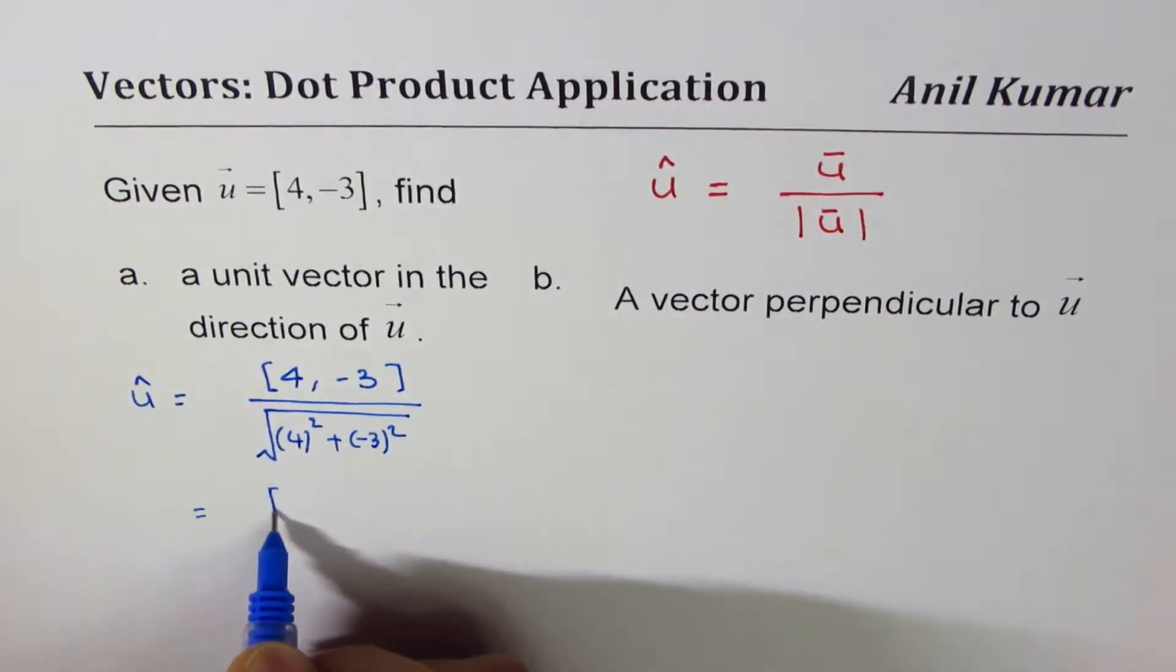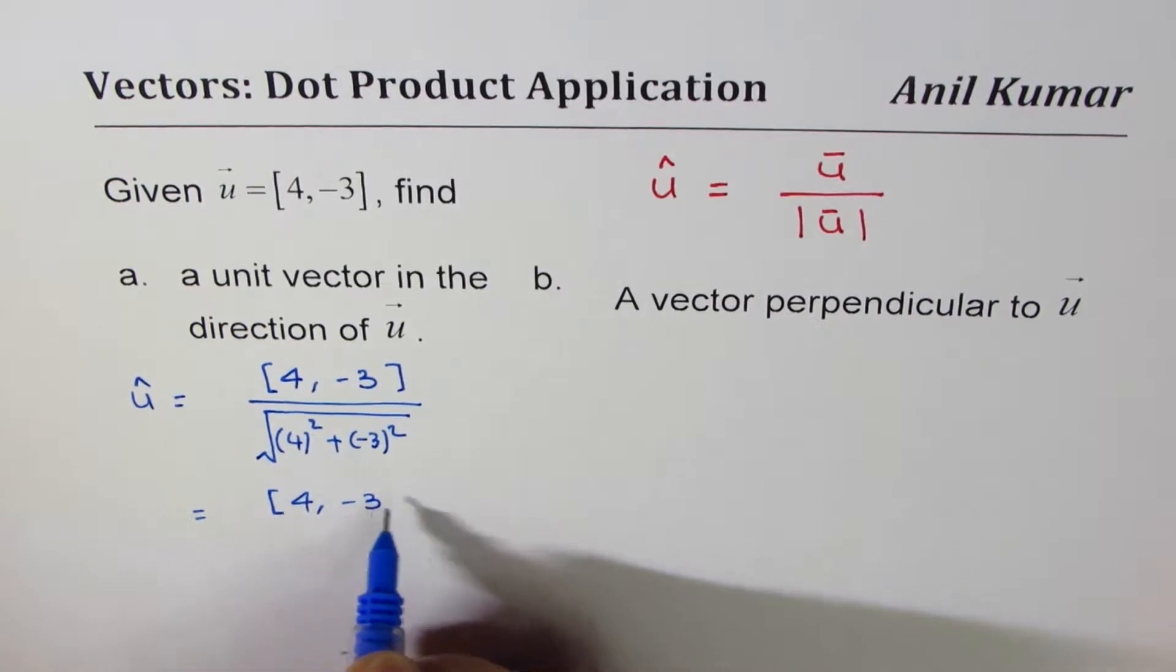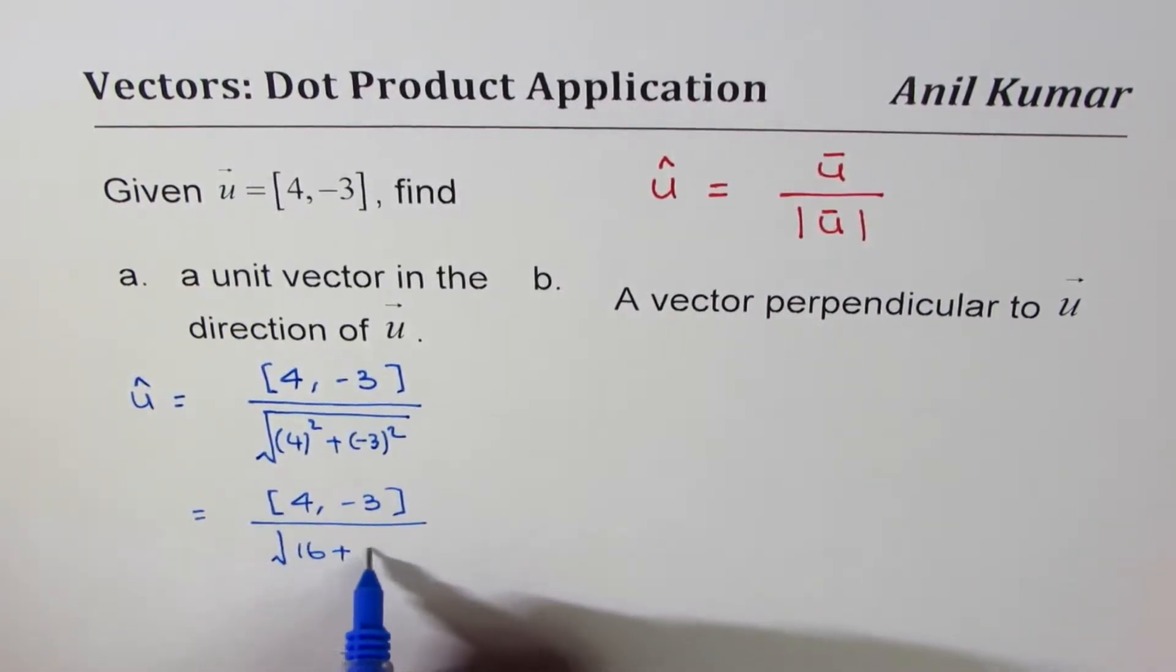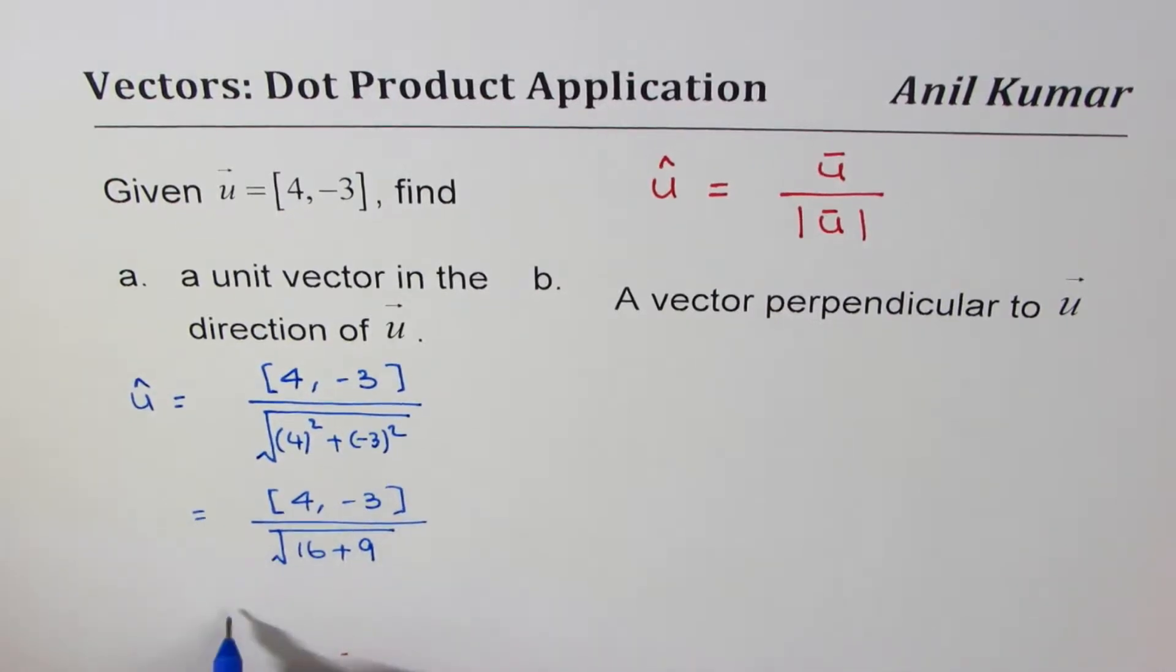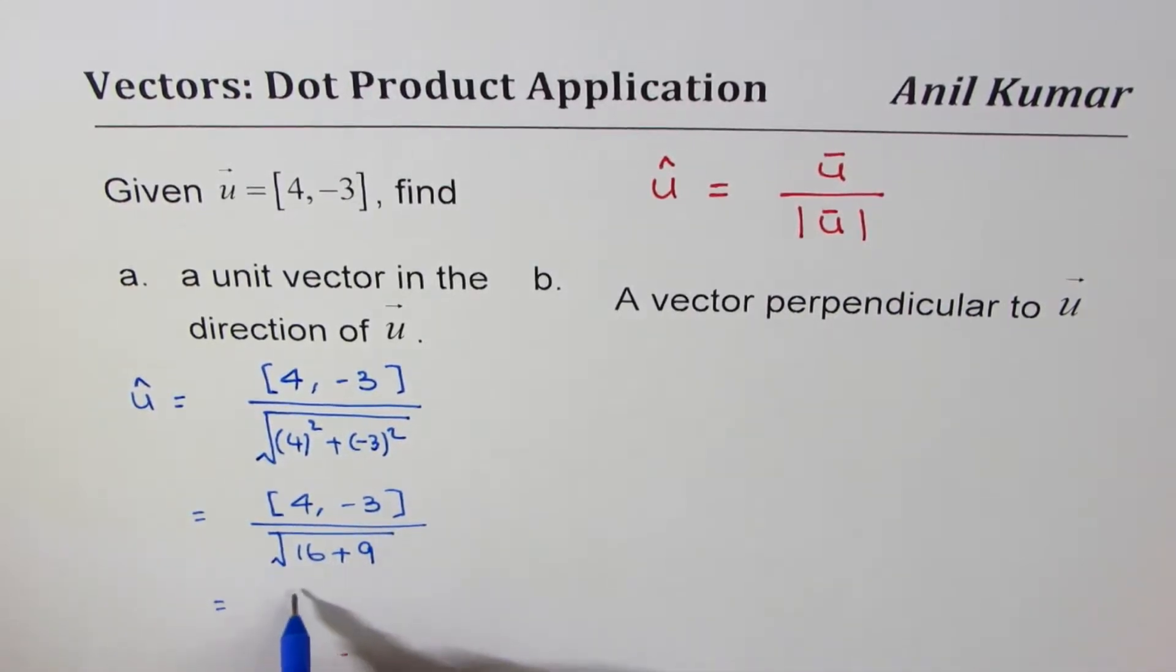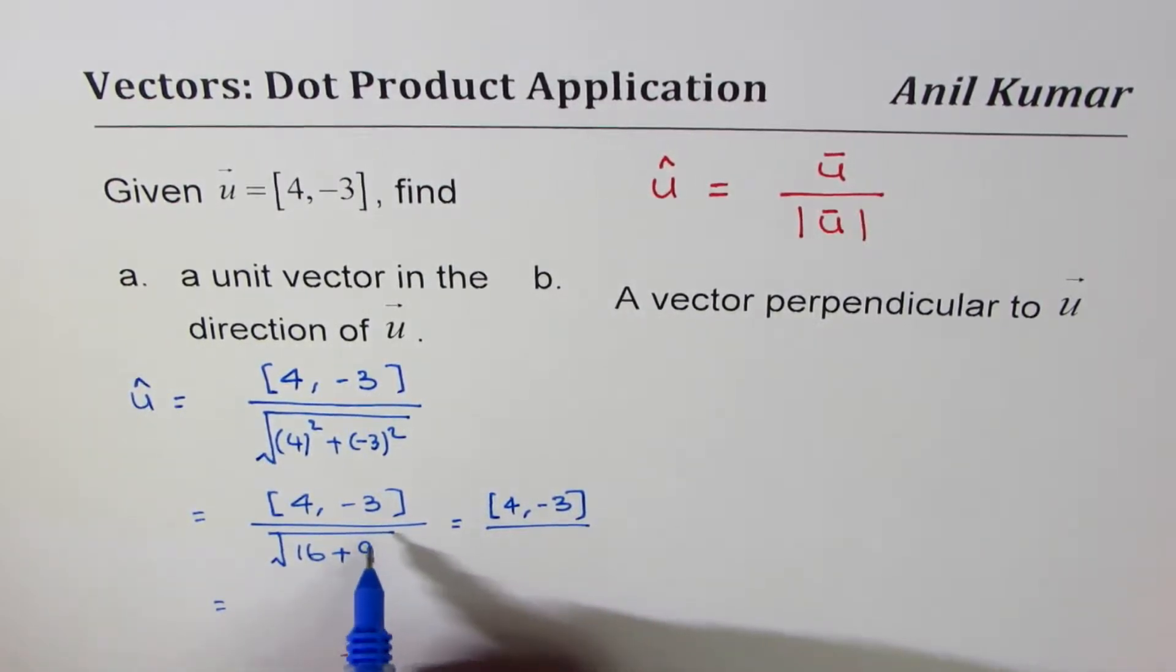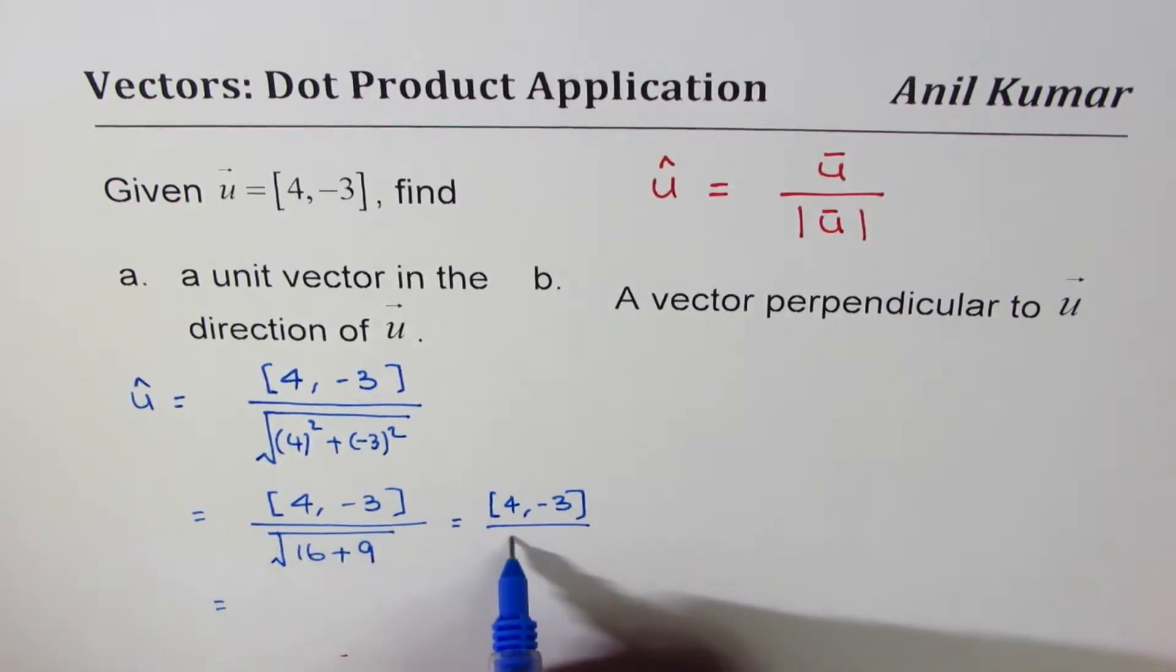That gives us [4, -3] over square root of 16 plus 9, which equals square root of 25, which is 5. The magnitude will be 1 for this unit vector when you divide the vector by its own magnitude.